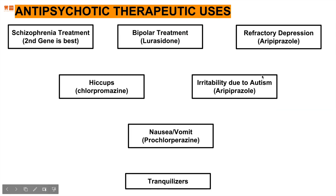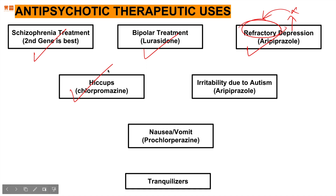To summarize therapeutic uses: antipsychotic drugs are indicated for schizophrenia, bipolar disorder, and refractory depression — meaning depression that was treated but returned and did not respond to standard treatment. Additional uses include hiccups, irritability due to autism, and nausea and vomiting as just discussed.